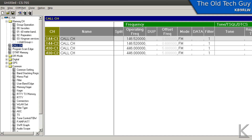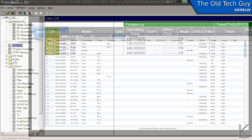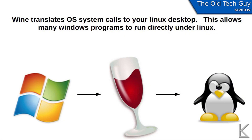So we're going to look at ICOM's software. Now ICOM's software is Windows only. So to use it under Linux, I'm going to use Wine. Wine is an application programming interface compatibility layer — basically, it's a program that emulates the Windows system calls so that Windows applications can run under Linux. And it works with quite a few applications, including this one.